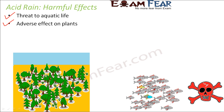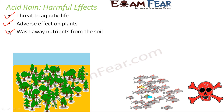Acid rain can wash away the protective covering present on the leaves of plants. Since every part of a plant is exposed to rainfall, the poisonous substances can affect leaves and therefore photosynthesis. It can also wash away nutrients from the soil, pollute the soil, and harm tiny organisms living inside it, such as earthworms and decomposers.